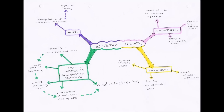Monetary policy is done using interest rates. So if we have a high interest rate — remember our interest rate is the cost of borrowing and the reward from saving — then there is a high cost of borrowing and high reward of saving. So therefore people aren't going to borrow as much, and any money they had before they're more likely to save, so our APC will decrease and our APS will rise.